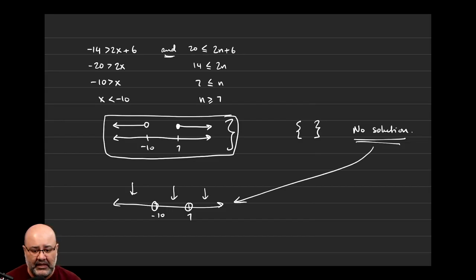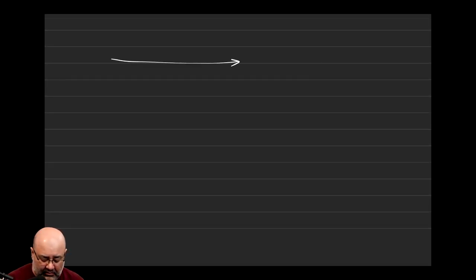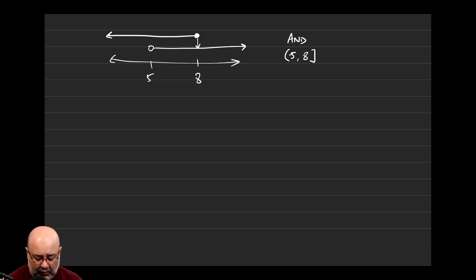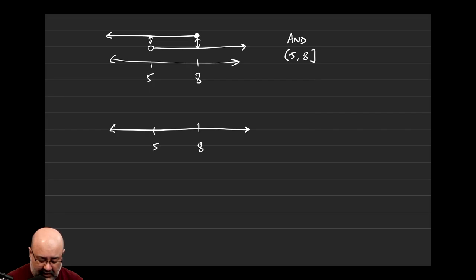The final answer is no solution, and you would indicate that on a graph like this. Similarly, let's say you had a problem with 5 here and 8 here — open circle going in one direction, closed circle going in the other direction — and it's an AND problem. With an AND problem, the answer would be 5 to 8: closed bracket at 8 and open parentheses at 5, because at 8 there is overlap and at 5 there is not. The final answer you would graph is open circle at 5, closed circle at 8, and everything in the middle shaded.